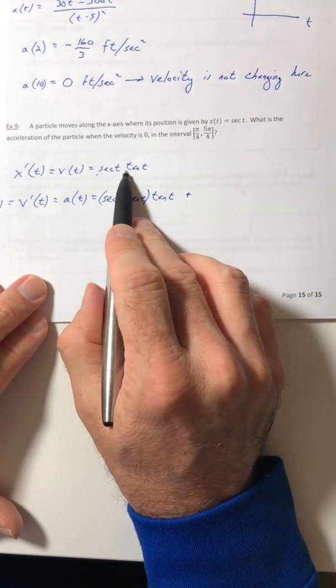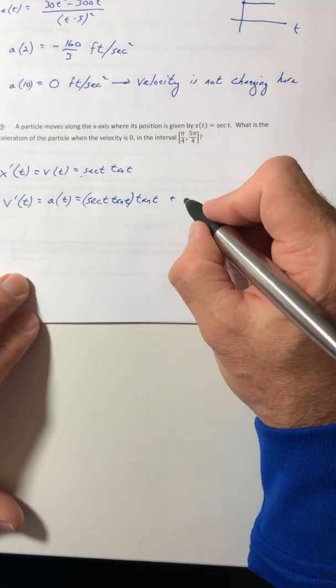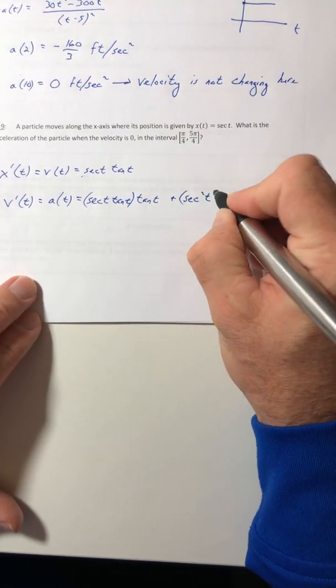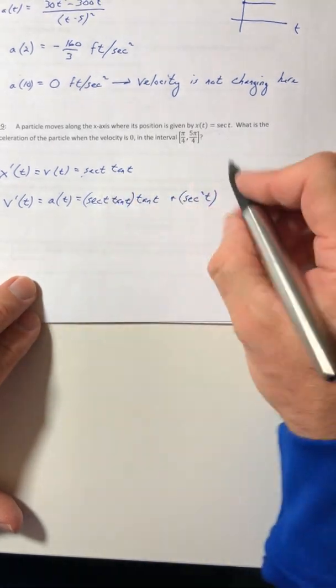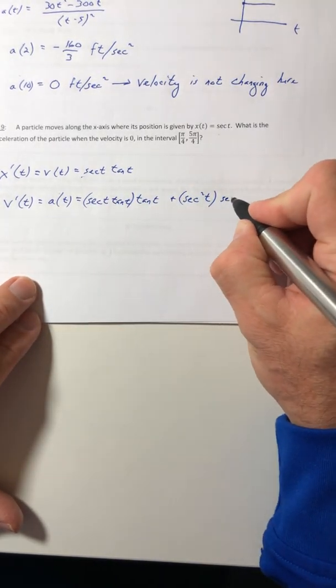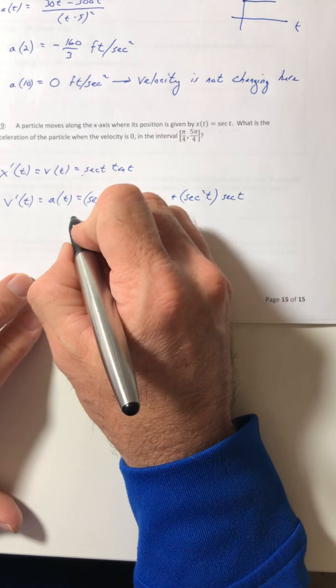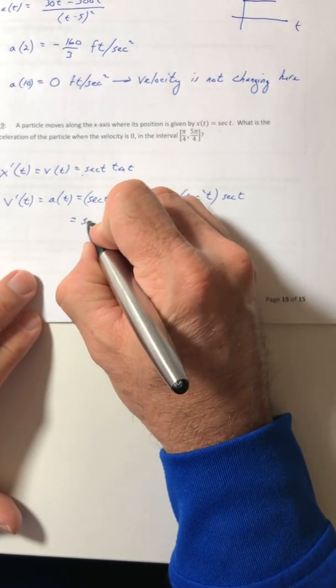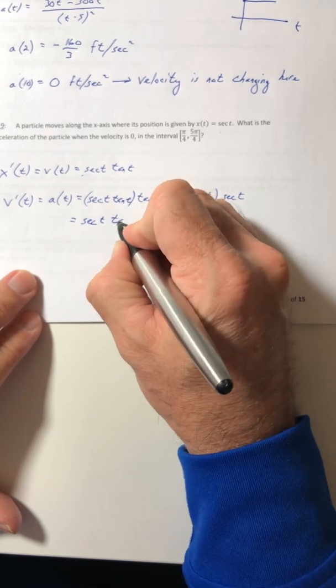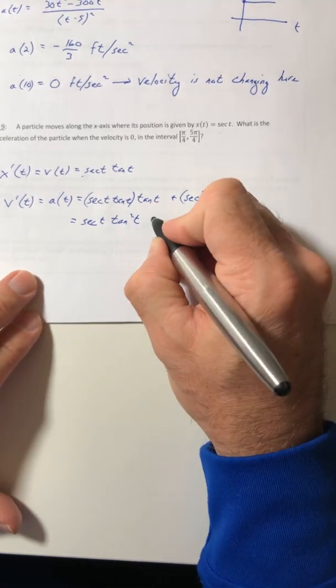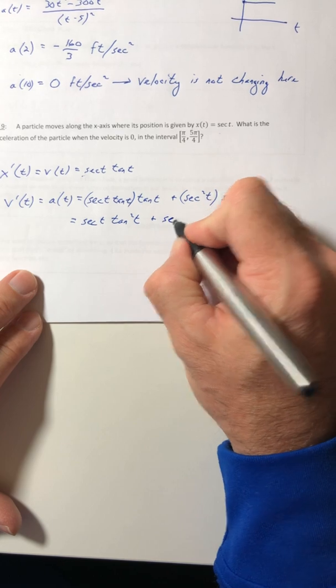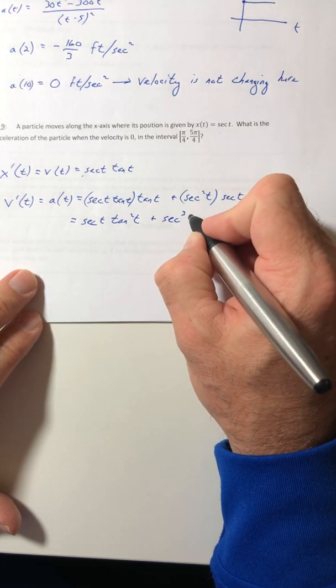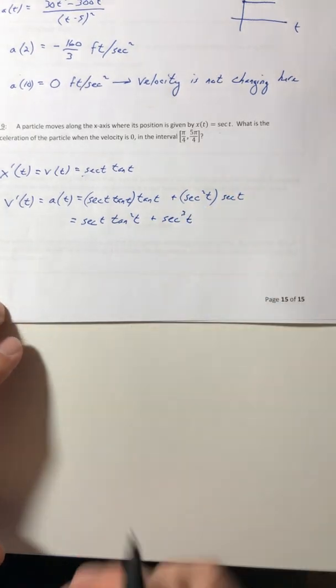The derivative of secant tangent, so I need the product rule again. So the derivative of secant is secant tangent times tangent, plus now to do the derivative of tangent times the front. And you can clean it up just a little bit. So secant tangent squared plus secant to the third.